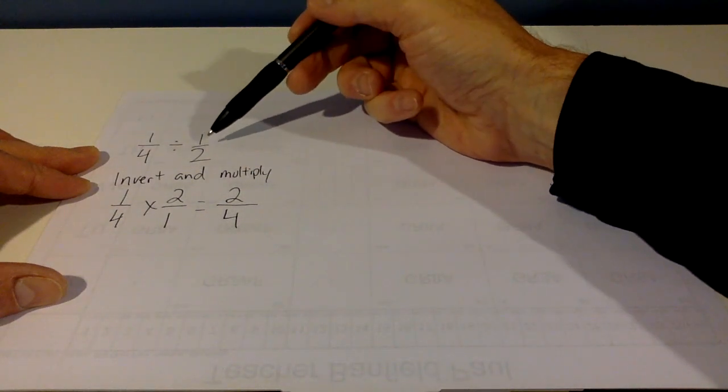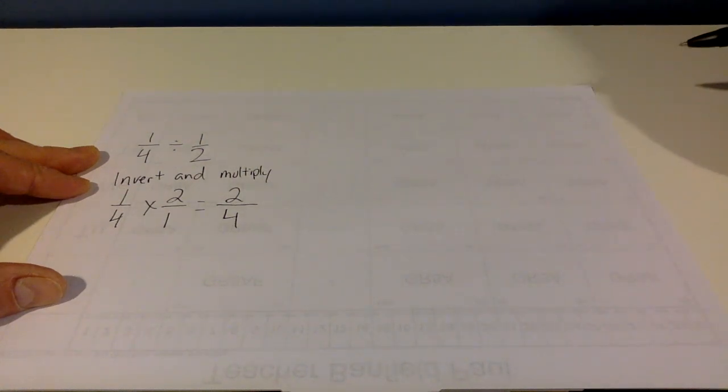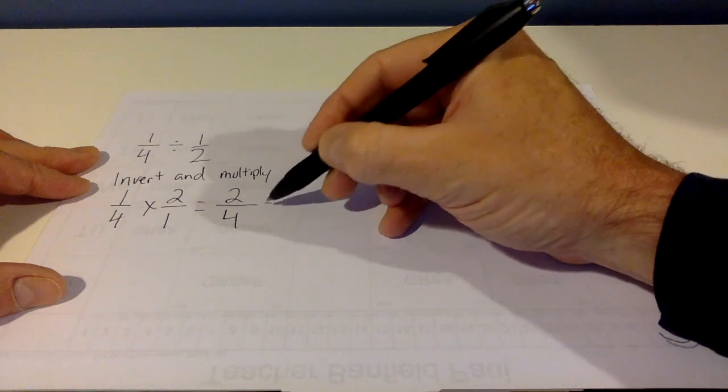So 1 quarter divided by 1 half is 2 over 4. And whenever we have a fraction that we could simplify or bring to a lower form, we should do so.